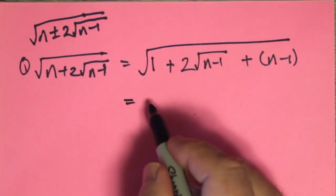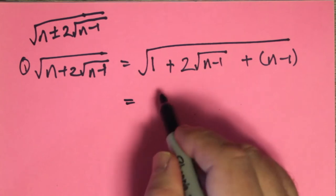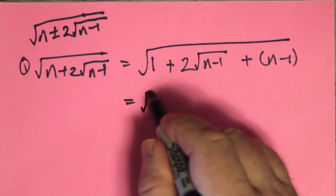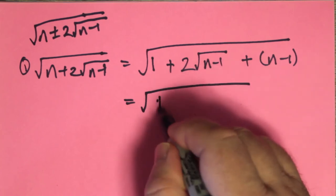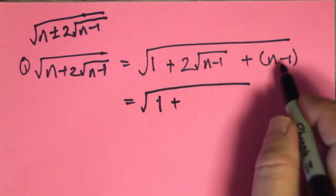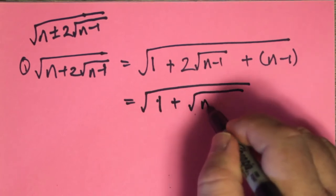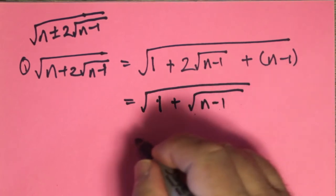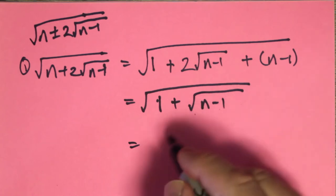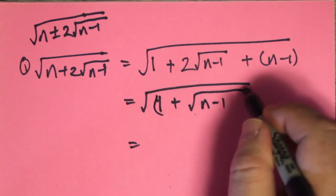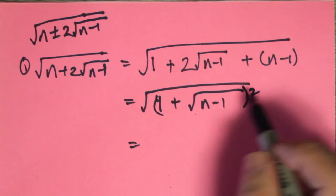So now we have the next line, we just have the square root turning this into a perfect square, 1 plus the square root of that term, the square root of n minus 1. And that's equal to, it's equal to, oh I'm sorry, forgot to square that.